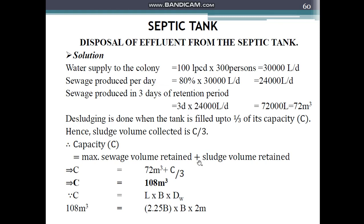Total water supply to the colony = 100 liters/capita/day × 300 people = 30,000 liters per day. Sewage produced per day = 80% of 30,000 = 24,000 liters per day. Since the retention period is 3 days, sewage volume over 3 days = 3 × 24,000 = 72,000 liters, or 72 cubic meters.